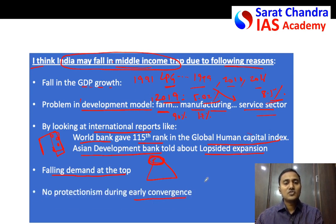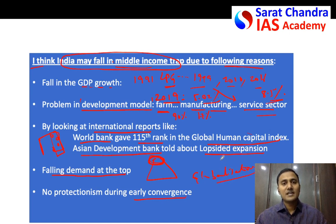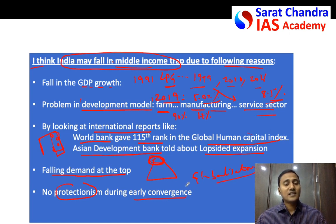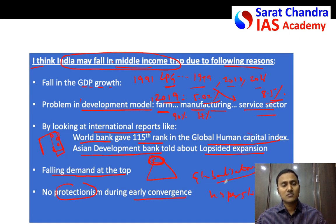During early convergence, globalization was good enough — India could export goods and grow trade, which is why the Indian economy grew very fast in earlier years. But of late, there is increasing protectionism, because of which trade is falling and GDP growth has fallen. China, Japan, and other East Asian tiger economies are called 'early convergers' because they grew during hyper-globalization — when trade was thriving with no protectionism. India is a late converger, now facing the problem of global protectionism.